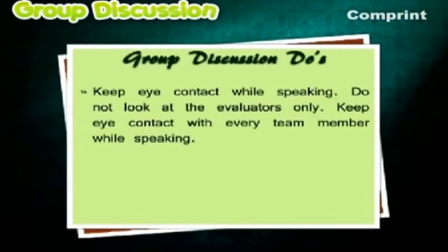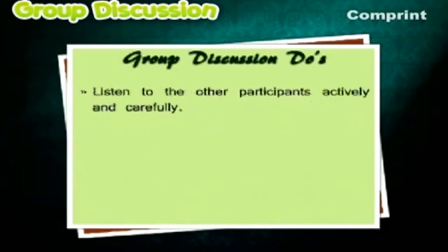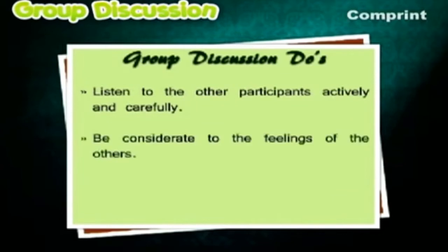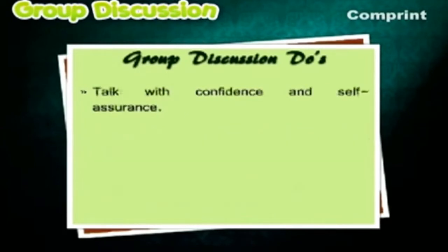Do's: Keep eye contact while speaking. Do not look at the evaluators only — keep eye contact with every team member while speaking. Make original points and support them with substantial reasoning. Facts and statistics should be provided if known. Listen to the other participants actively and carefully. Be considerate to the feelings of others. Modulate the volume, speech and tone of your voice. Speak clearly and talk with confidence and self-assurance.